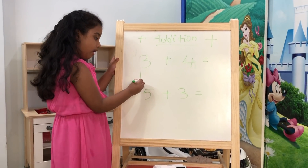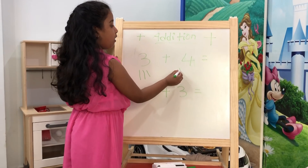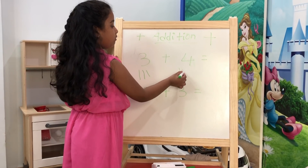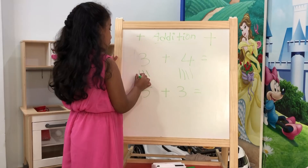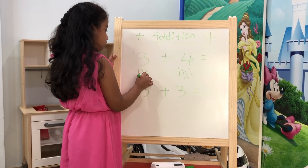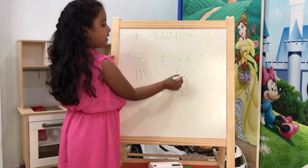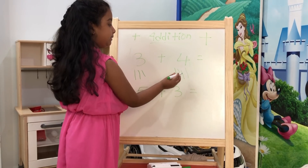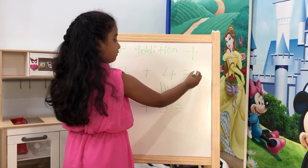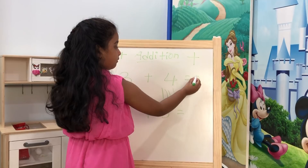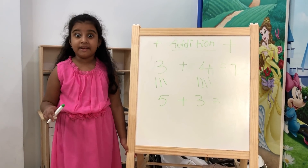Let us see some examples. One, two, three — one, two, three, four — one, two, three, four, five, six, seven. Three plus four is seven.